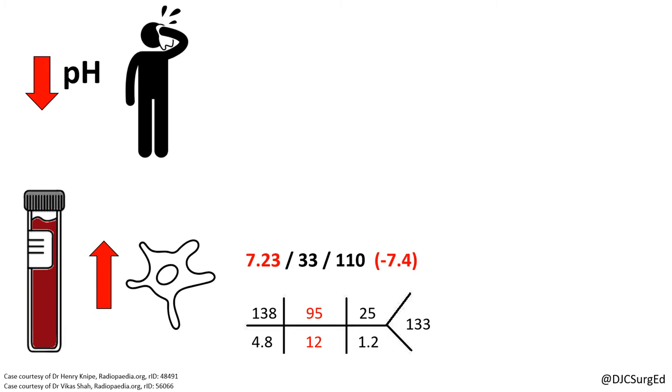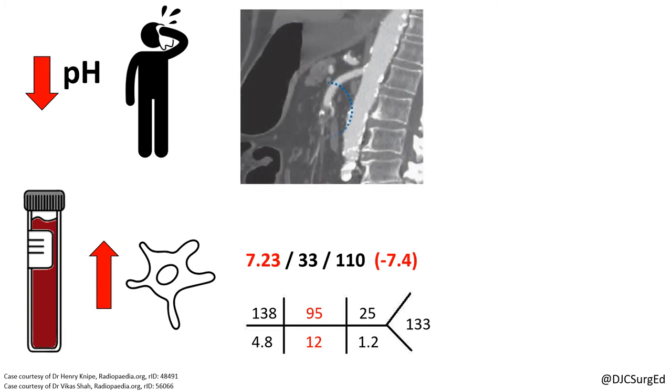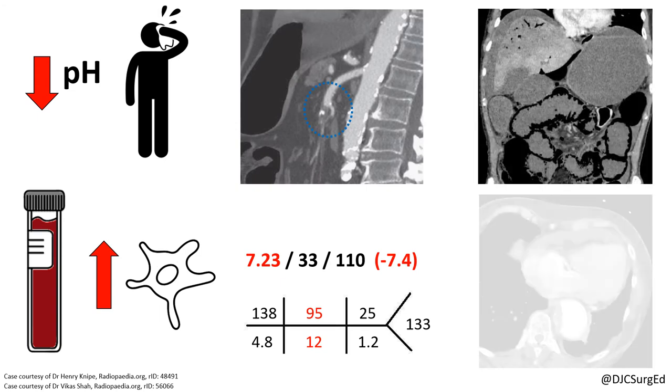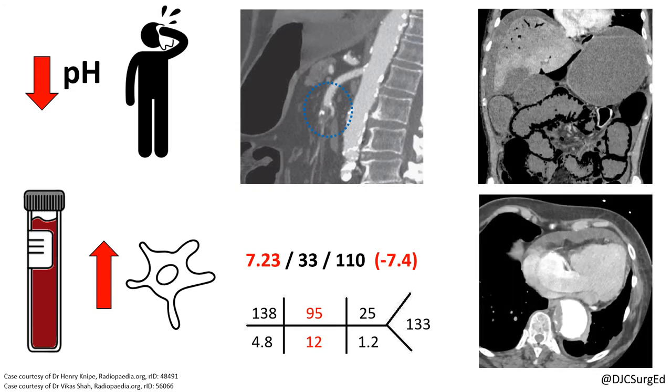A CTA of the chest, abdomen, and pelvis is a definitive diagnostic study and will detect arterial filling defects, signs of bowel ischemia, and potential proximal causes.